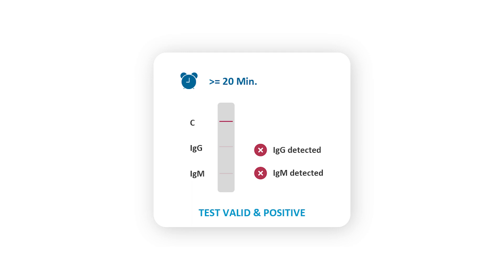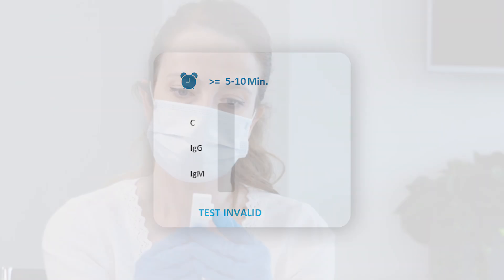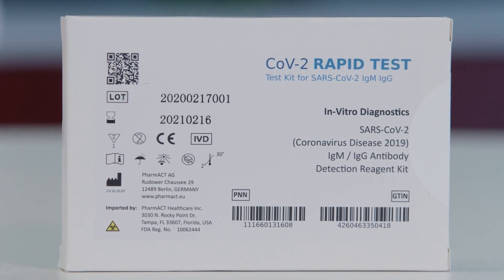If the test has not detected infection, there will be no purplish-red line at either IgM or IgG. If there is no clearly visible purplish-red line at the control line C within the first 5 to 10 minutes, the test is invalid and should be repeated using a new kit. The test is for single-use only and is disposable.